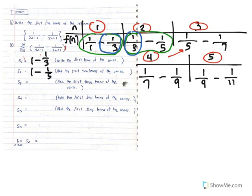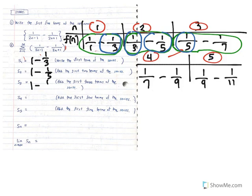For S sub 3, adding the first three terms, again an interesting thing happens. The negative 1 third and 1 third add to 0, and the negative 1 fifth and 1 fifth add to 0, leaving 1 minus 1 seventh. You might start noticing a pattern, but we want to continue with the fourth and fifth partial sums before writing a general formula.